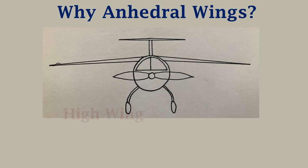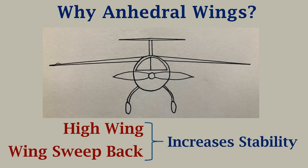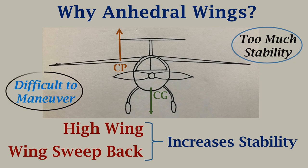If we look at aircraft having a high wing configuration, the combination of high wing and wing sweep back tend to increase the roll stability of the aircraft. This is because of the increase in distance between the center of pressure, where the lift acts, and the center of gravity, where the weight of the aircraft acts. This means that aircraft having a high wing configuration will have too much stability. Stability is good for protecting the aircraft against wind disturbances, but too much stability means that the aircraft becomes difficult to maneuver.